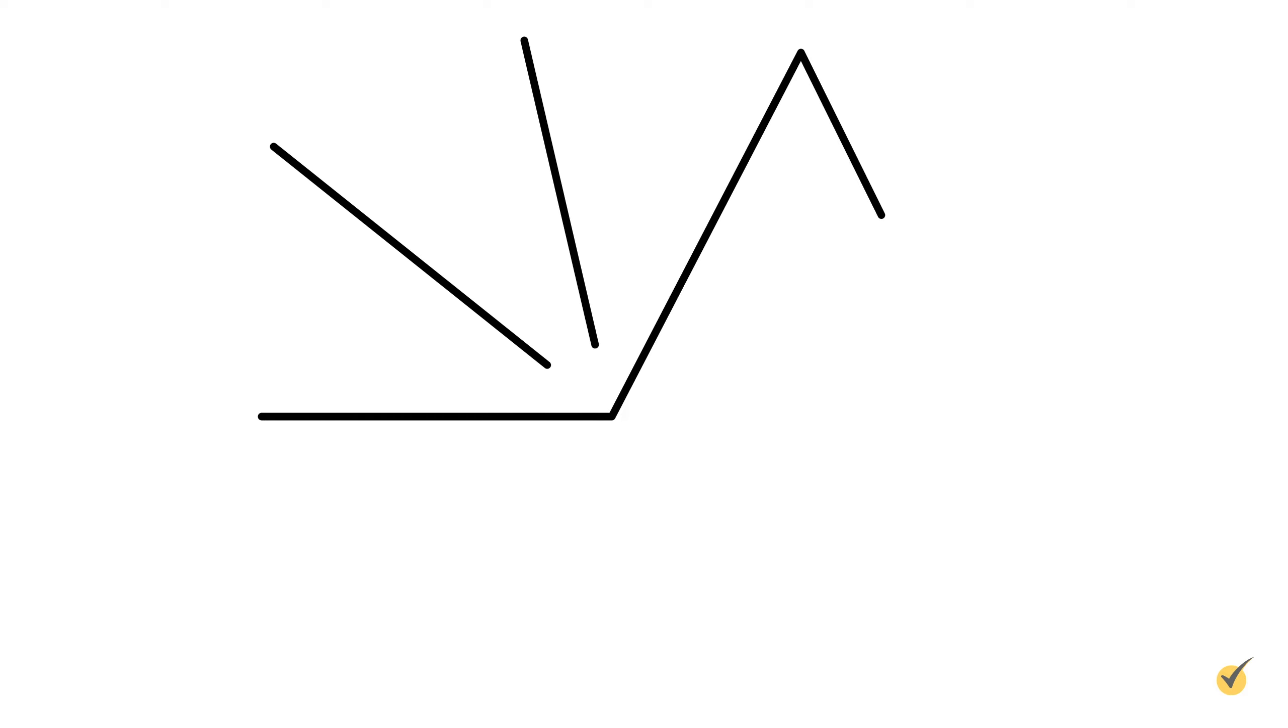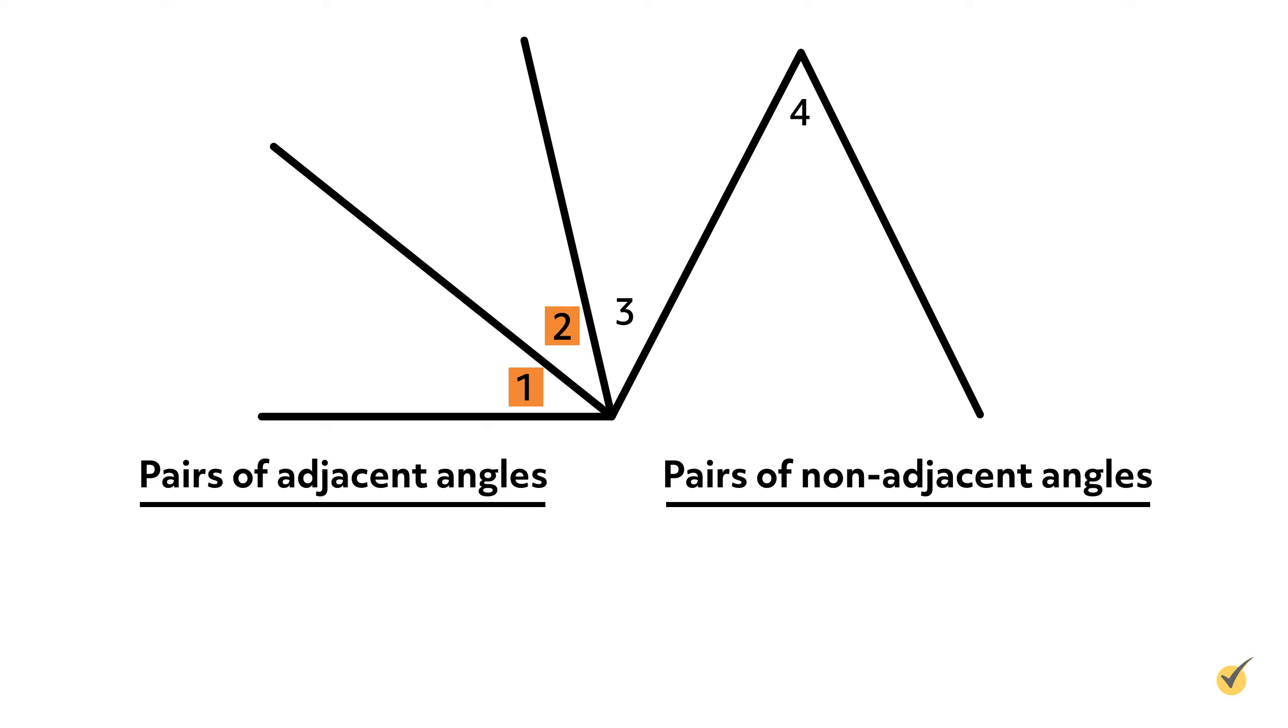Let's take a look at some more angles. In this diagram, which pairs of angles are adjacent? Starting from the left, we can see that angles 1 and 2 share a common vertex and a common side. For this reason, they are adjacent.